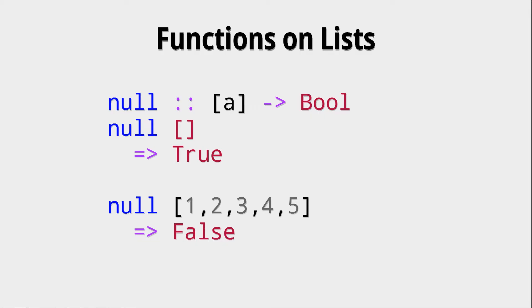We can also see that null, head, length, and all of these functions work on polymorphic lists, meaning that this list of a's here means that this a is just a variable type. This could be anything: a list of integers, a list of booleans, a list of strings, a list of lists even.